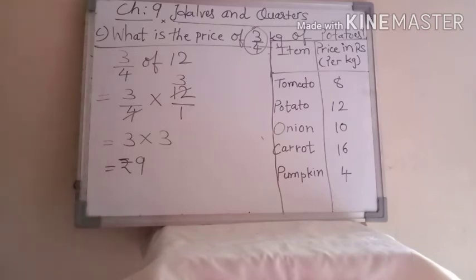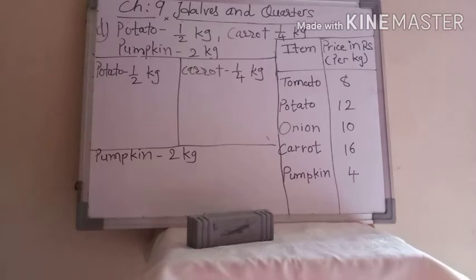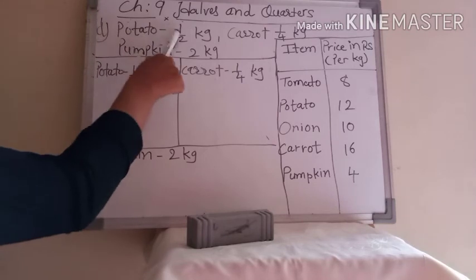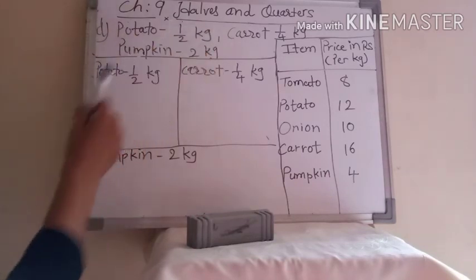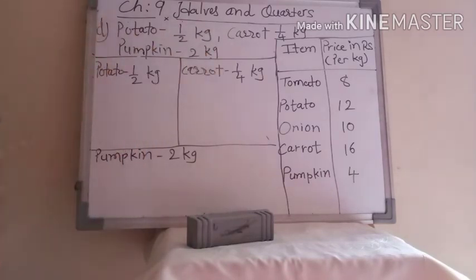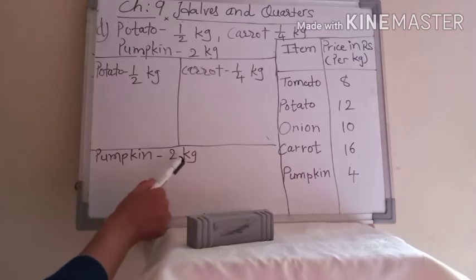Understood how to do it? Now our fourth question: Katie is going for shopping. Everyone see in your book and read with me. She has only rupees 20 with her. Can she buy all the things in her shopping list? The items in the list are: potato half kg, carrot one fourth kg, and pumpkin two kg. She wants to buy all these things in rupees 20.